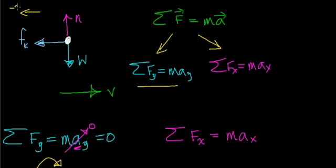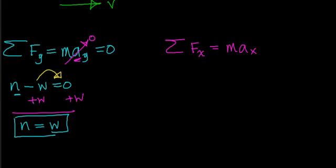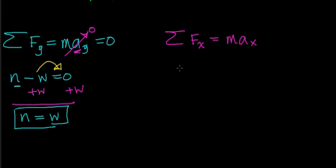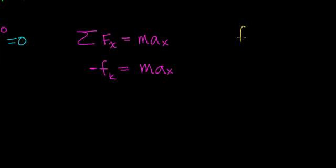The frictional force acts in the negative x-direction — opposite to the direction of motion. Applying Newton's second law, we get: minus F_k (the kinetic friction force) equals mass times acceleration in the x-direction. The object must be accelerating in the x-direction because it has to slow down; otherwise it would continue its state of motion. The kinetic frictional force equals the coefficient of kinetic friction, mu_k, times the normal force.